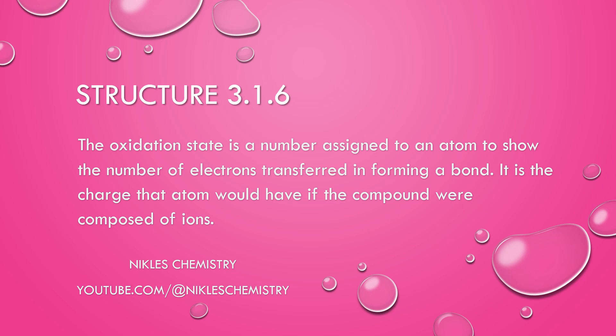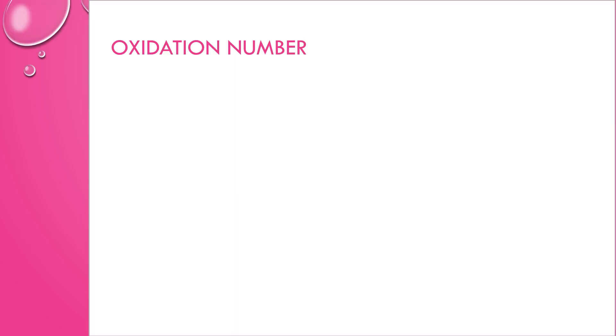Hello, today we're going to talk about structure 3.1.6, which is all about oxidation states. Oxidation number is also called oxidation state, and you can use those interchangeably for the IB test. It shows the number of electrons transferred when forming a bond. It's not always the same thing as a charge, although it can be, but it is the number of electrons.